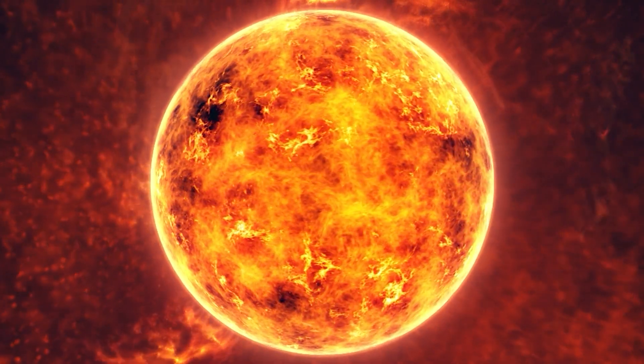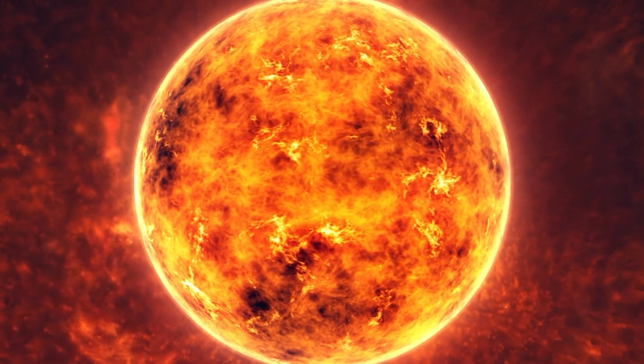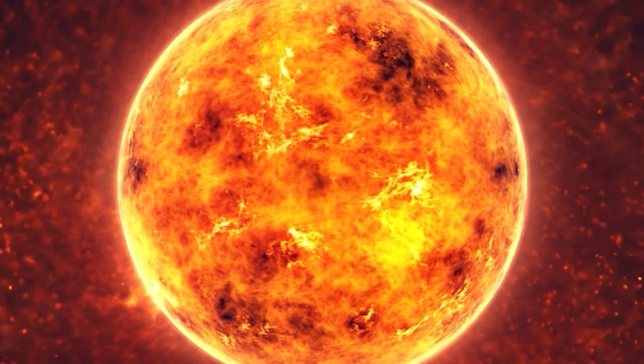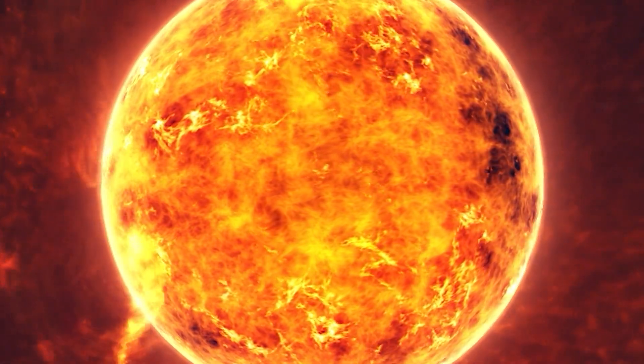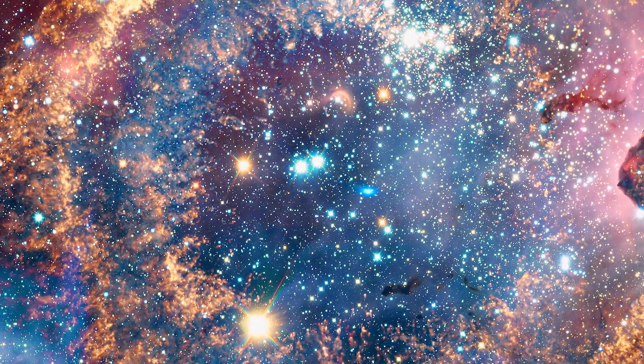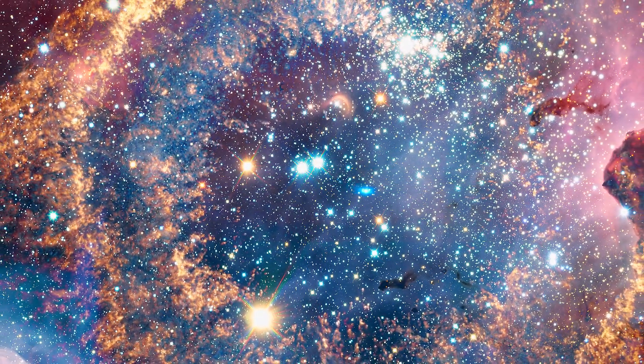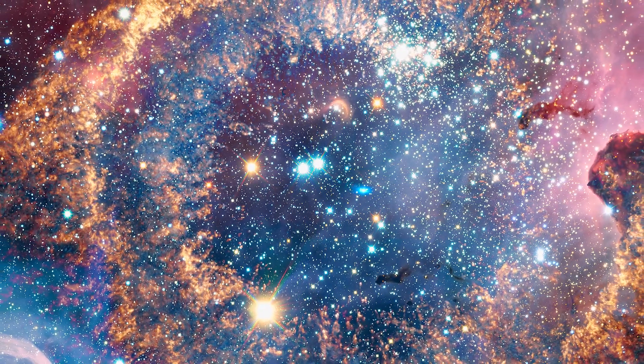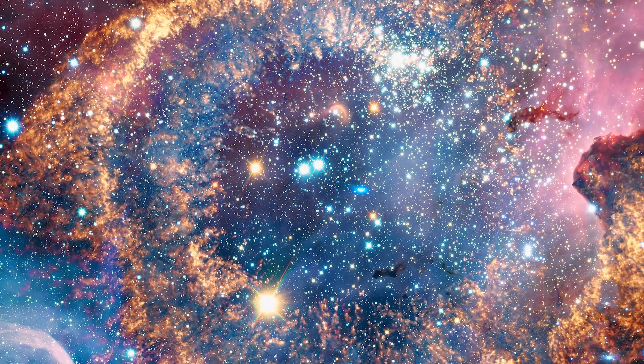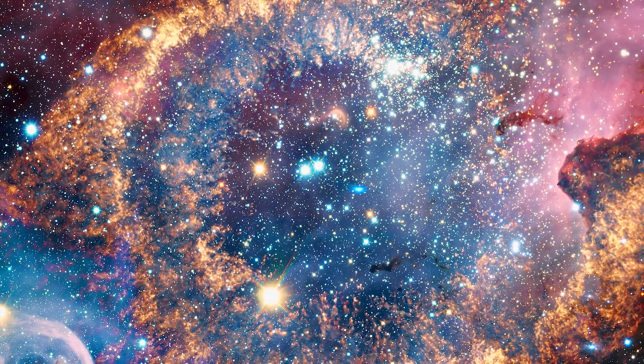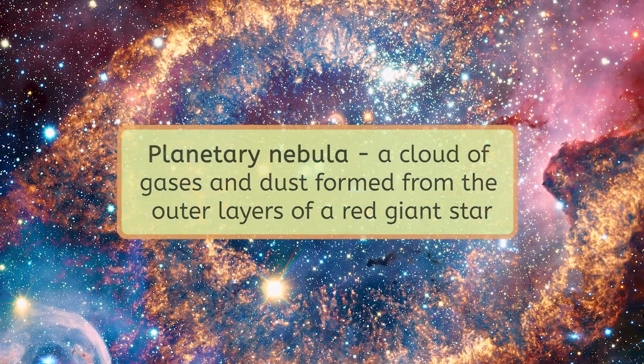Then the outer layers cool off and expand until they are up to 1,000 times larger than the original star was. Once the helium in the core of the red giant star is used up the star expels the outer layers of gas in an explosion of gases and dust known as a planetary nebula.